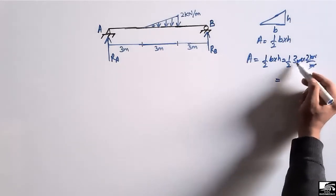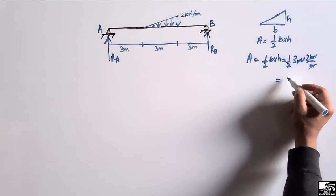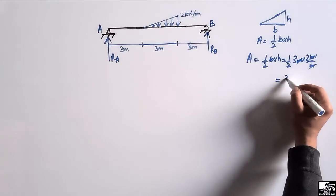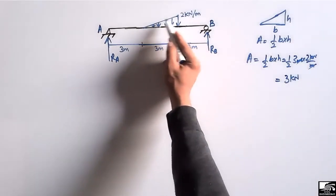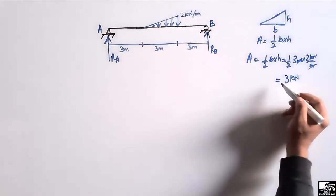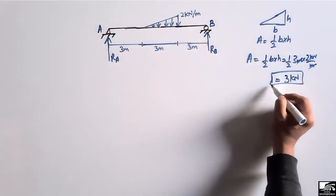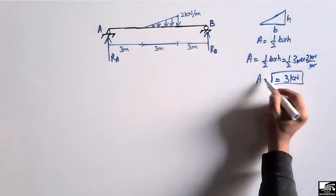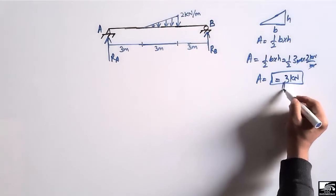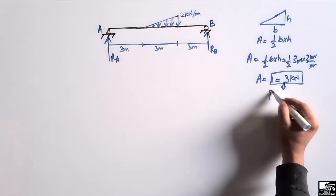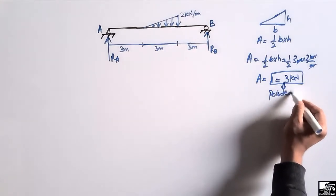The meters cancel and we are left with kilonewtons. So it will be 3 kilonewtons. We convert this triangular load into a pointed load — this is the area of this triangular load, now acting as a concentrated load on this beam.